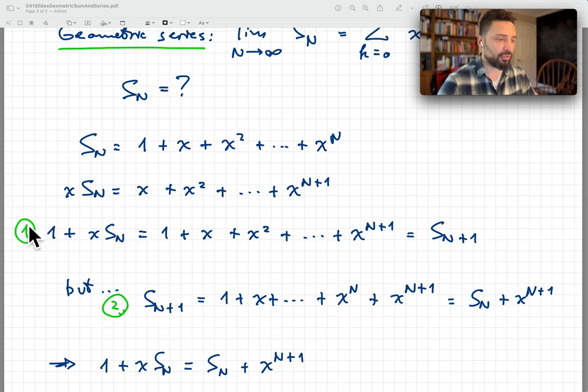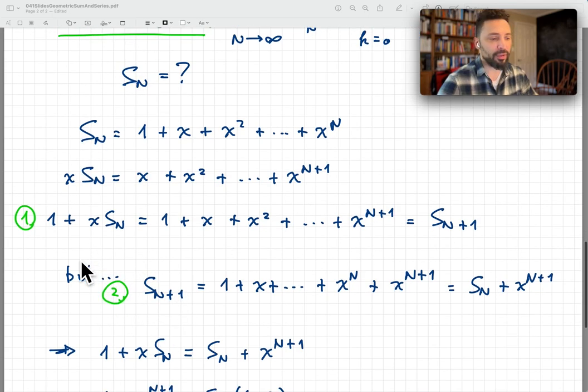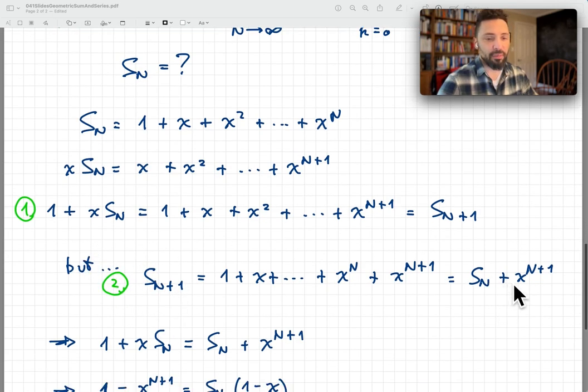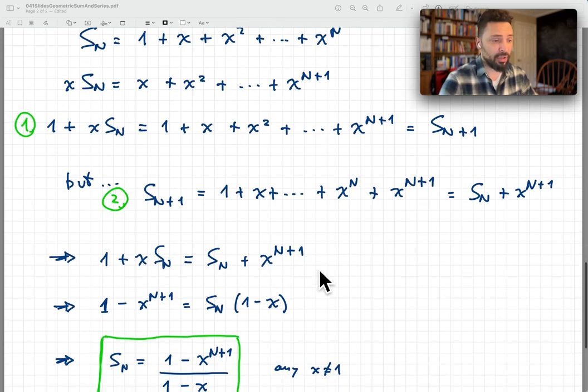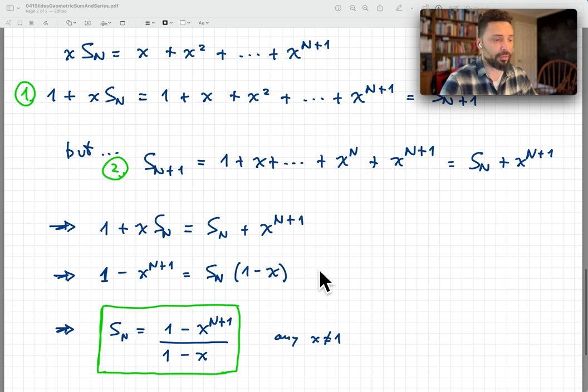And so this first statement is we're going to use that 1 plus x times S_n is S_n plus 1. And the second statement we're going to use is that S_n plus 1 is S_n plus x to the power n plus 1. And so this tells us then that the left-hand side, 1 plus x S_n is equal to S_n itself if you add this one extra term, x to the power n plus 1. And so this allows us to solve for S_n. It's very easy to do. You put all the terms involving S_n on the right side of the equation and all the terms not involving S_n on the left side of the equation.